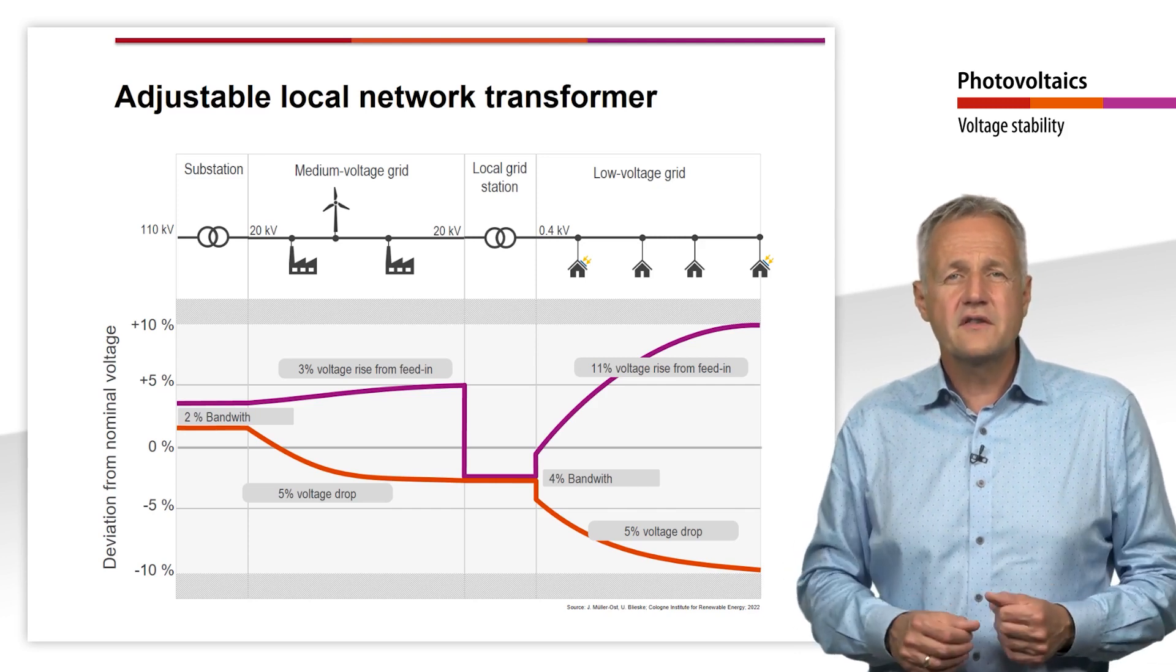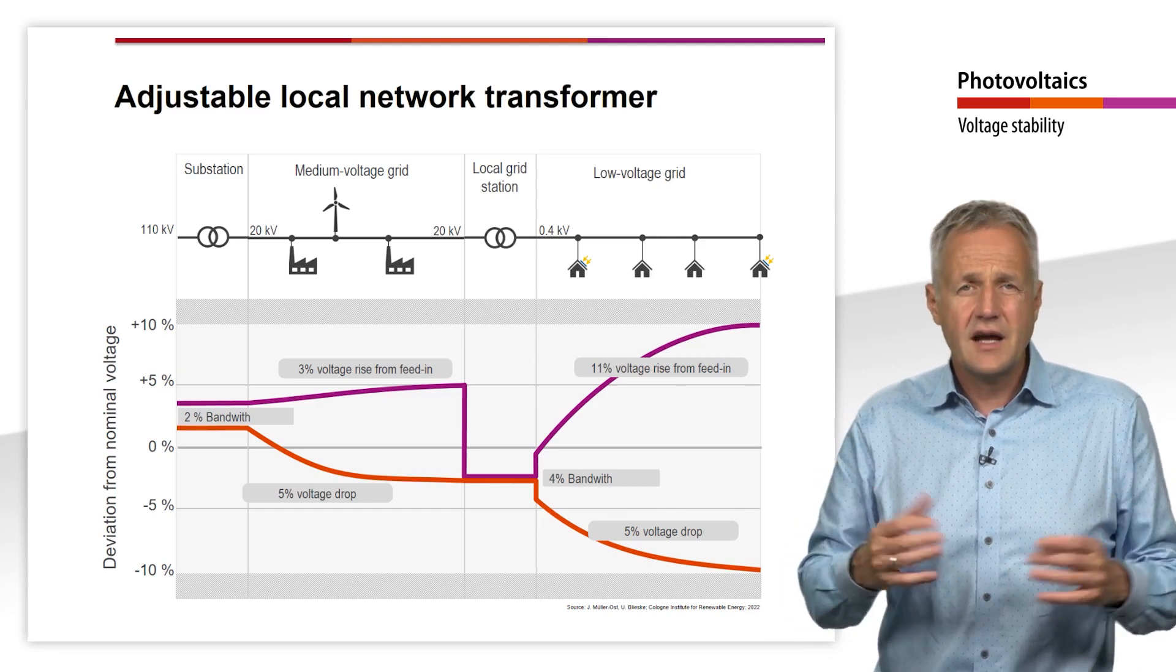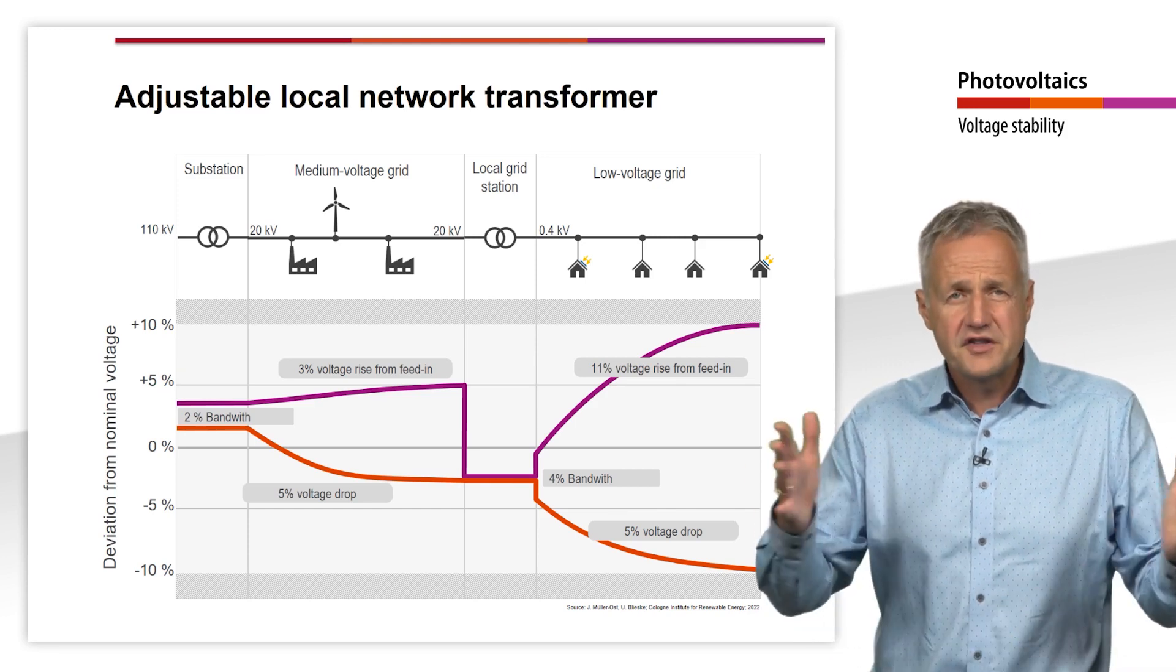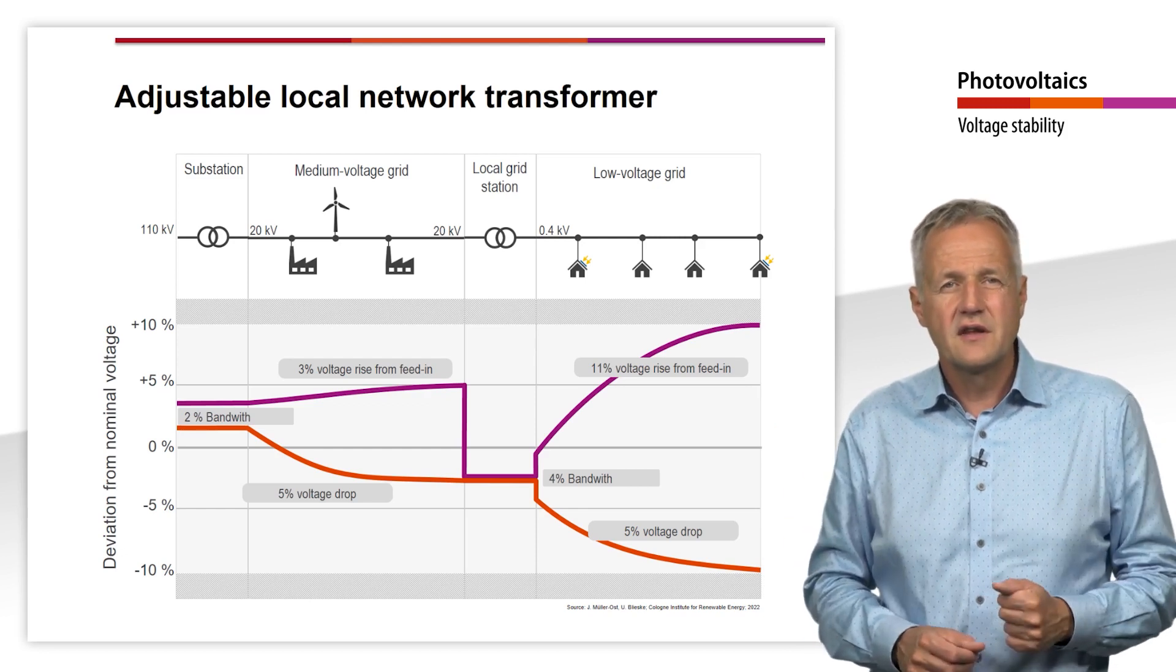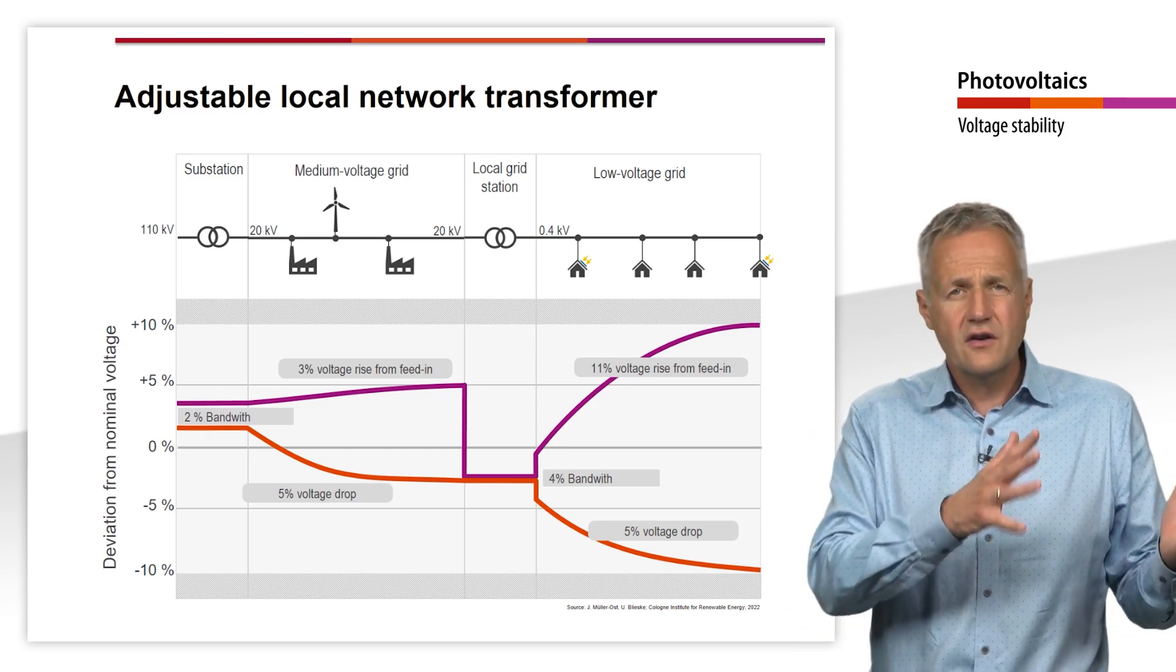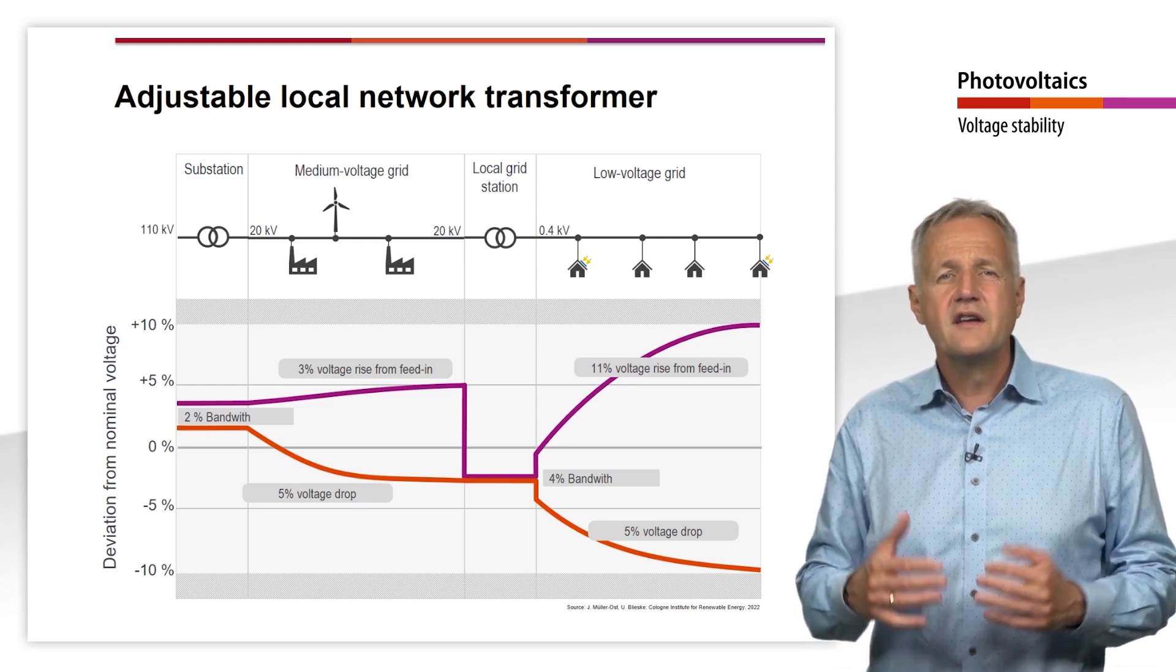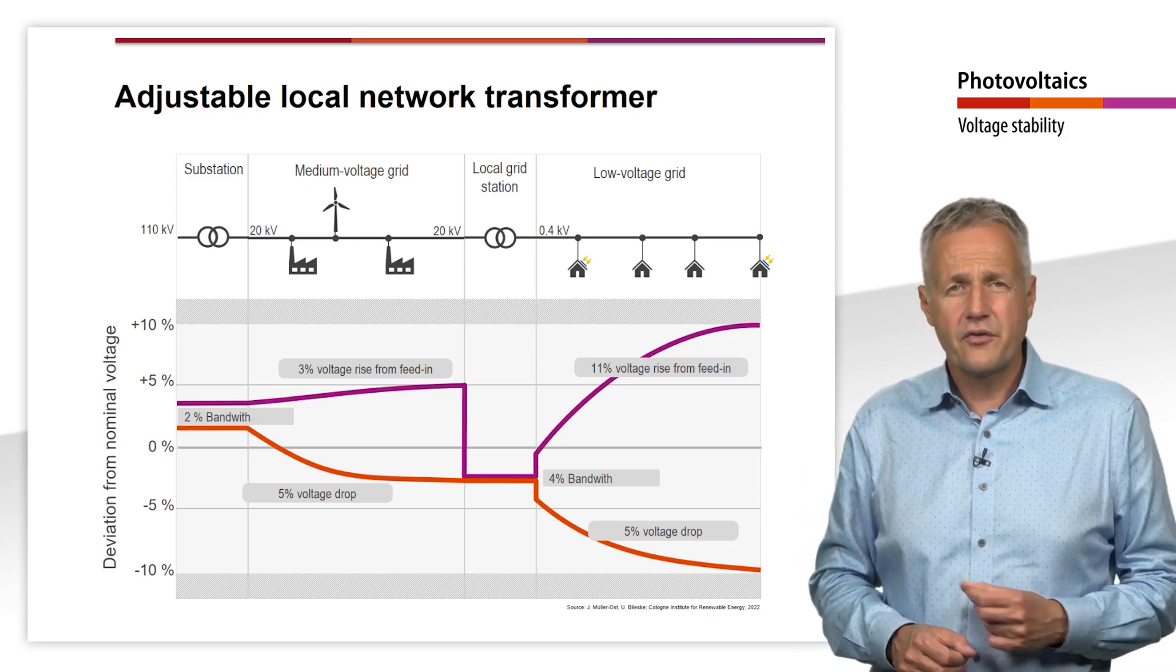This allows the voltages between the medium voltage and the low voltage grids to be decoupled so that a wider voltage band is available for feed-in at both grid levels. The decision to expand the lines or replace the local network transformer is essentially an economic one, made and borne by the grid operator.